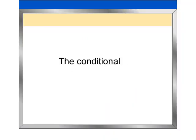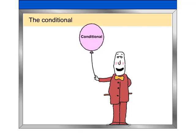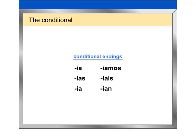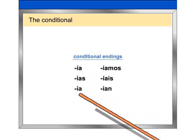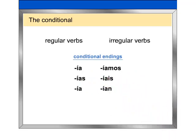The conditional tense in Spanish expresses what you would do or what would happen under certain circumstances. The conditional tense is formed much like the future tense. The endings are the same for all verbs, both regular and irregular.